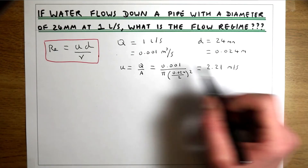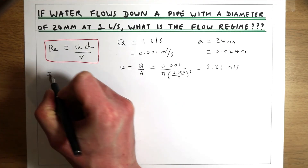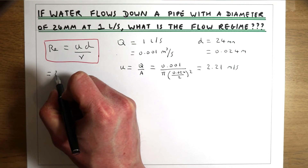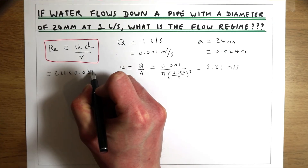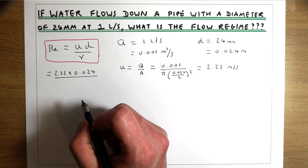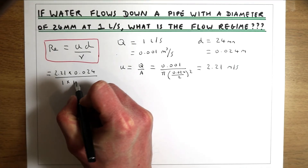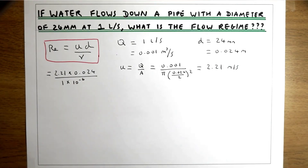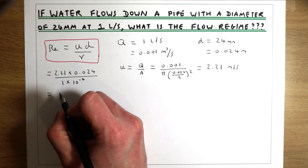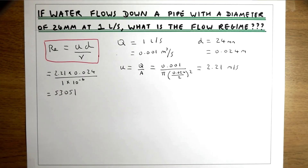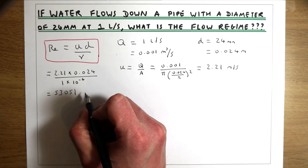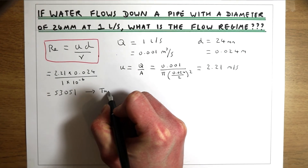Now we have everything to plug into the Reynolds number equation. The velocity is 2.21 m/s, the diameter is 0.024 m, and the kinematic viscosity of water at room temperature is about 1 × 10⁻⁶ m²/s. That gives us a Reynolds number of 53,051. Since this is well above 4000, this flow is going to be turbulent.